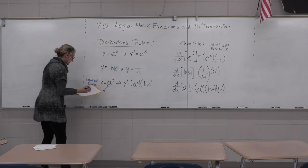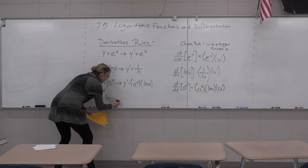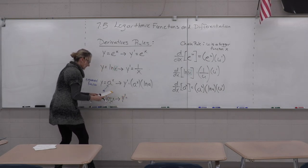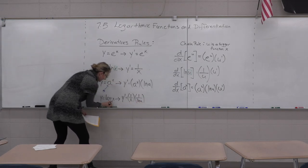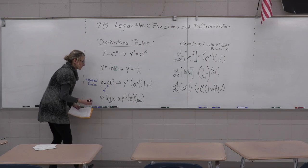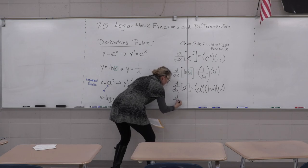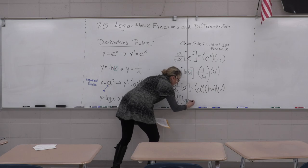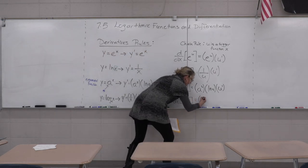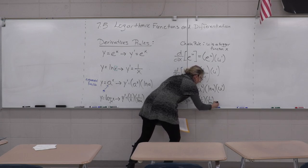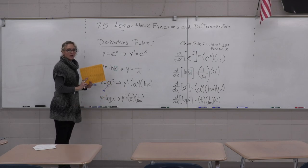Last new rule: the derivative of y equals log base a of x. The derivative y prime equals one over x times one divided by the natural log of a. For the chain rule version, it's one over u times one over the natural log of a times u prime. Those are your four new derivative rules for logs and exponentials.